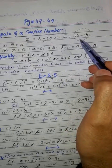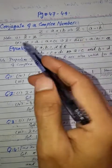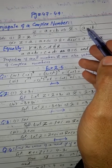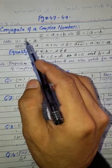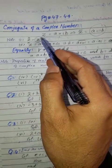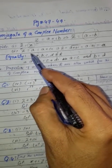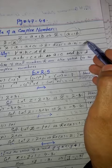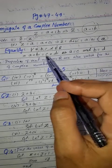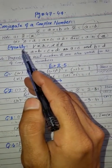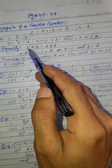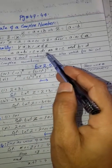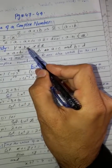Z and Z bar are conjugates of each other — if Z is A plus B iota, then Z bar is A minus B iota, and vice versa. If you take the conjugate of a conjugate of a complex number, you get back the original number. Also, if a complex number Z equals a real number, the imaginary part is zero.